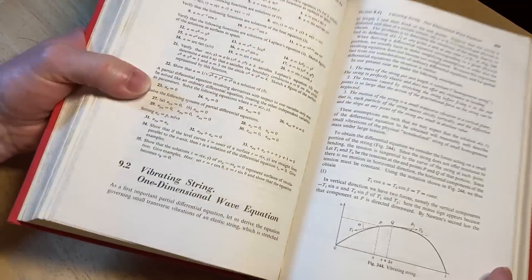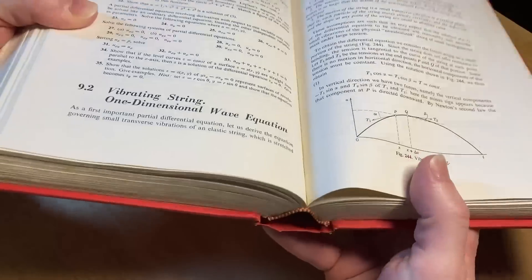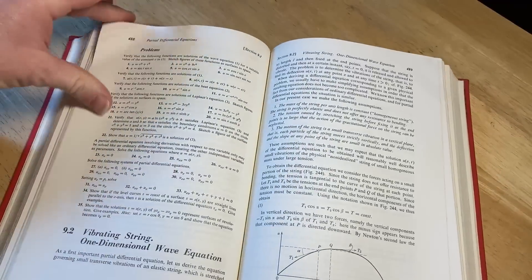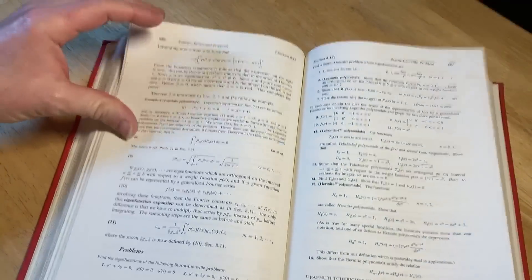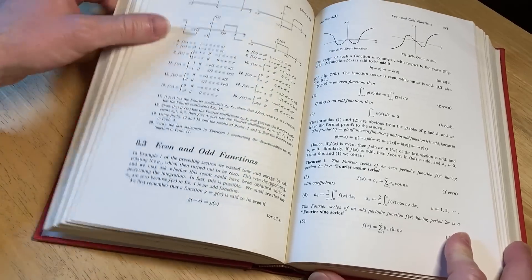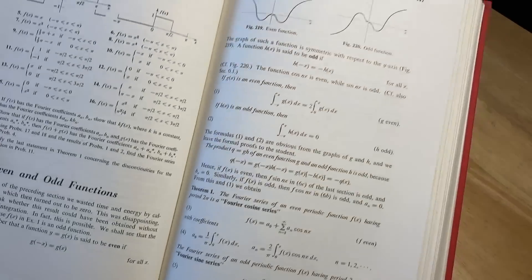Let's jump ahead to a random section, see what we can find here. Vibrating string, one-dimensional wave equation—you got some PDE stuff here. Wow, this book is heavy and thick. It's super thick.